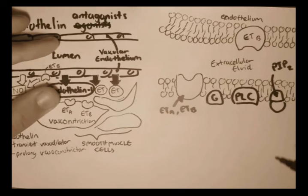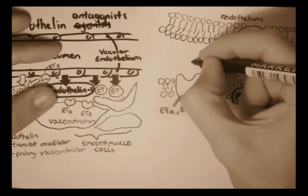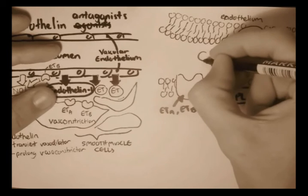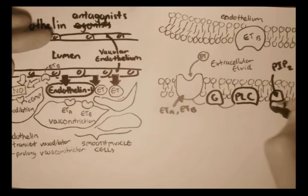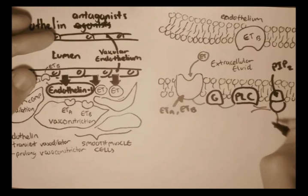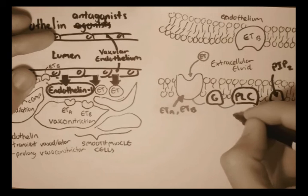So what happens is, when endothelium gets secreted by the vascular endothelium cells, it binds to the receptor on the smooth muscles like this, creating a cascade of G protein events. Basically, the phospholipase C phosphorylates phosphoinositol-4,5-bisphosphate, or PIP2, making two second messengers.